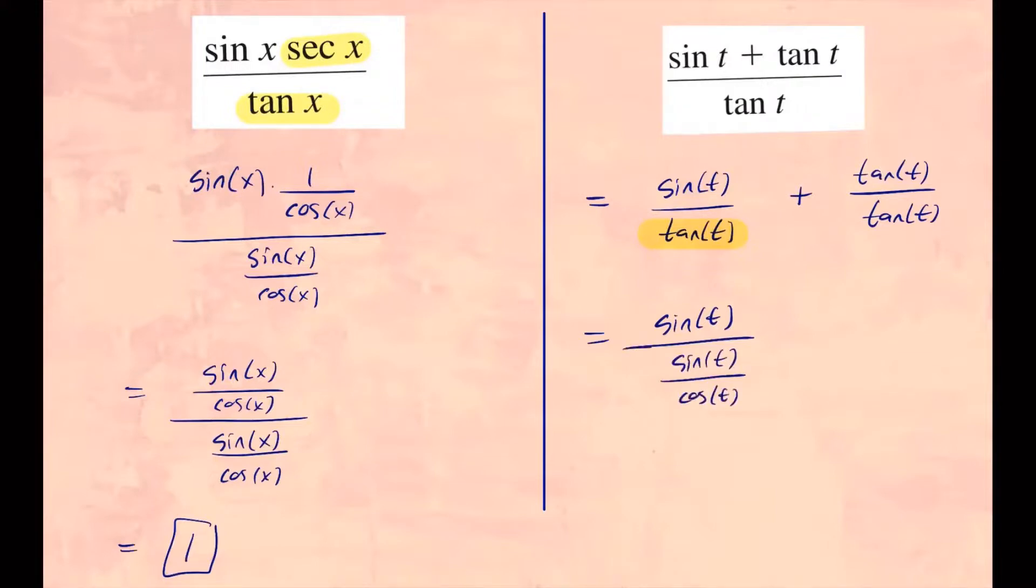I'm just going to expand the fractional line. Plus, this is 1. And here, I can go ahead and cancel these. So what I have is simply 1 over 1 over cosine t plus 1.